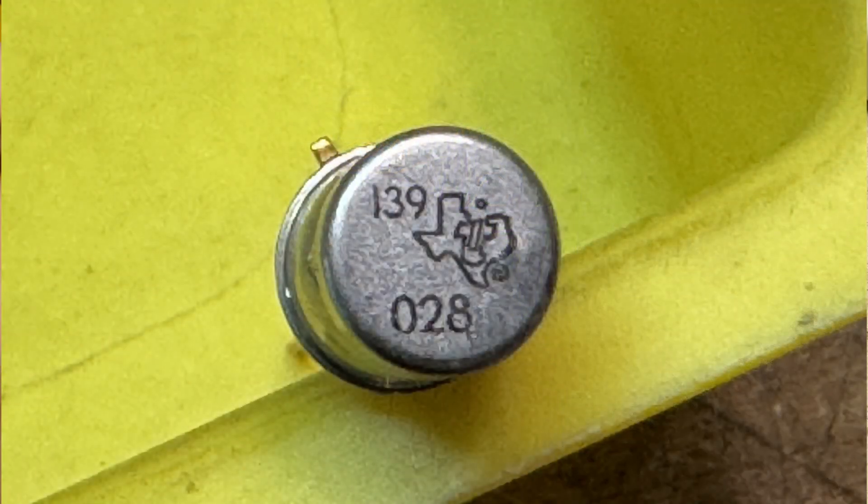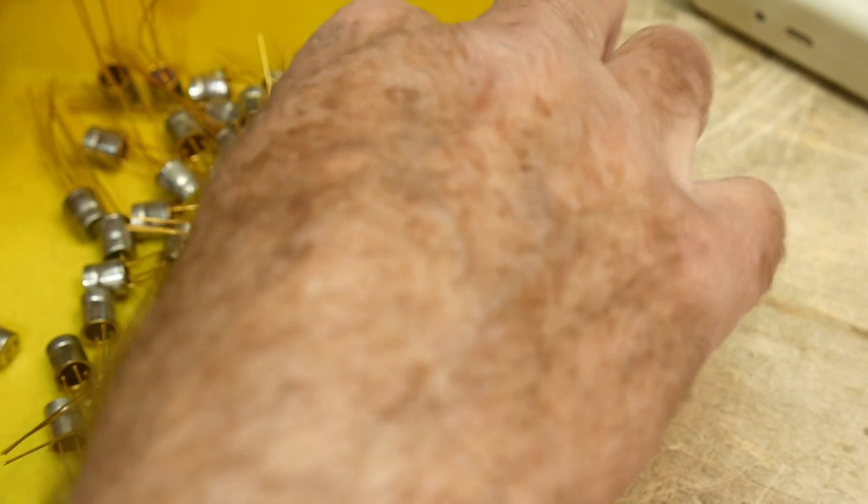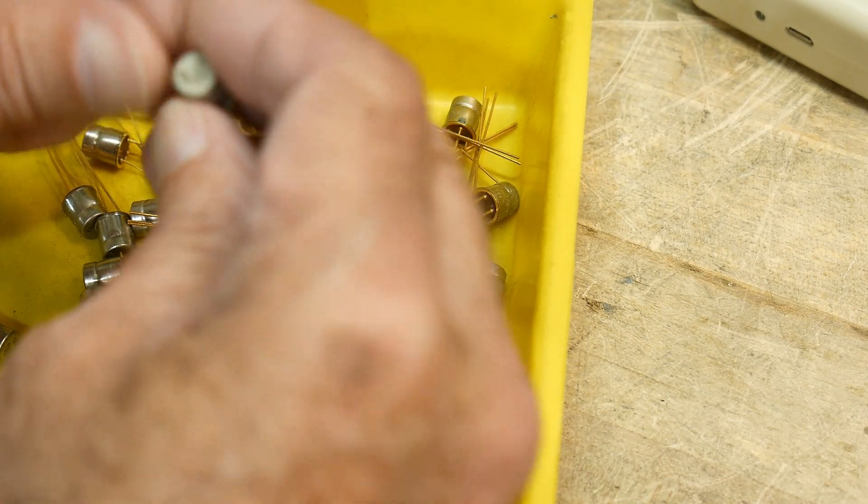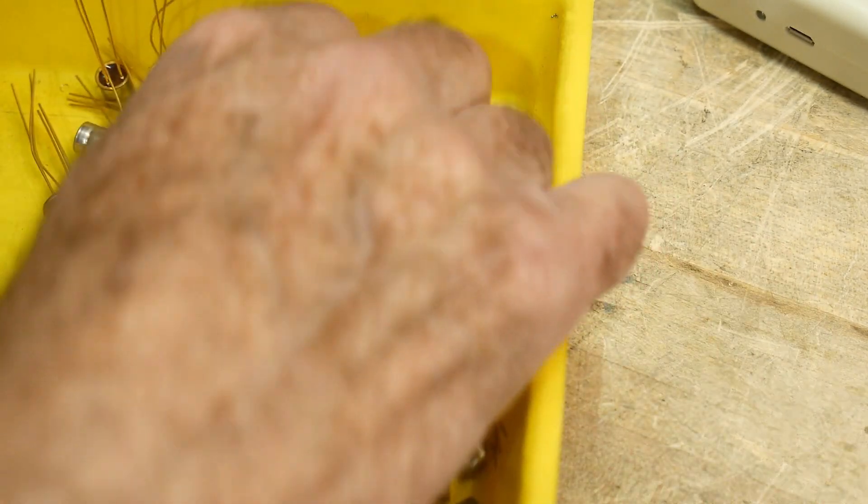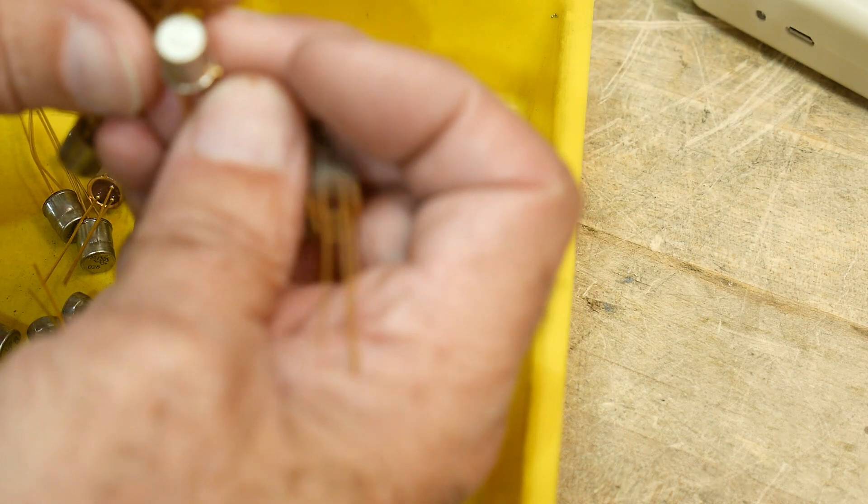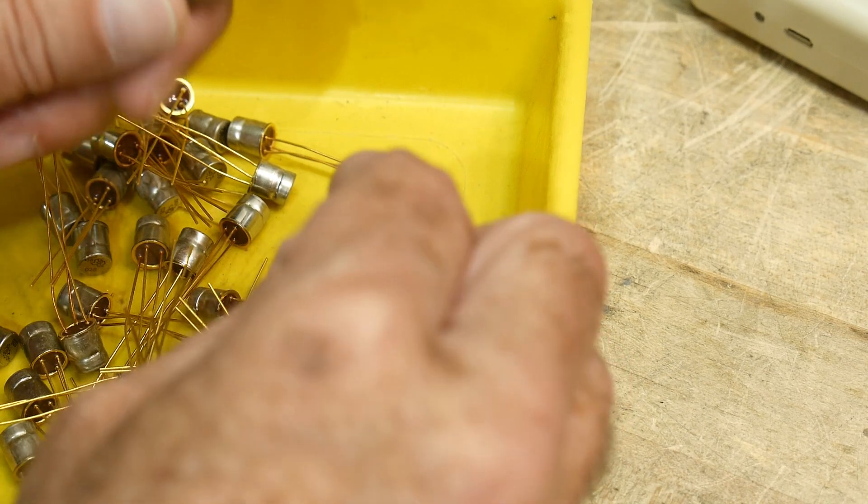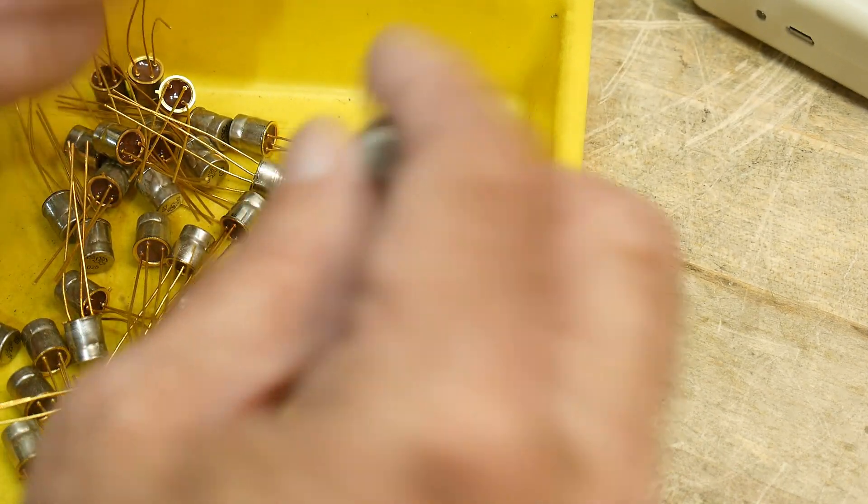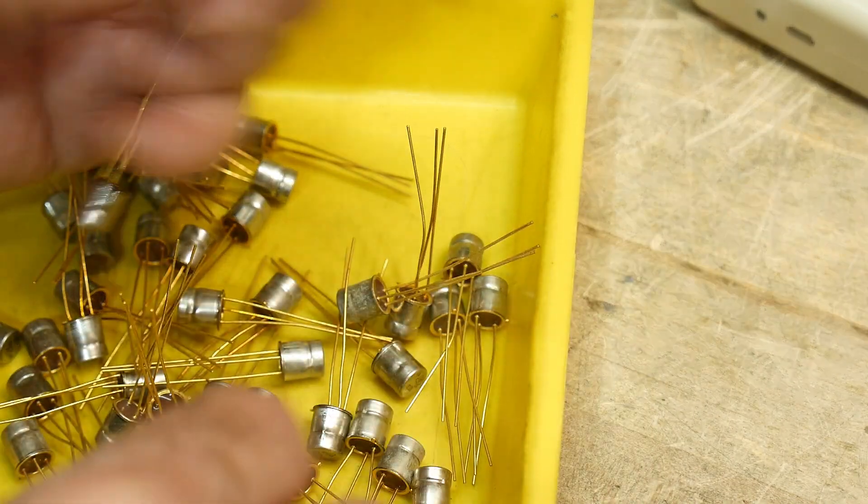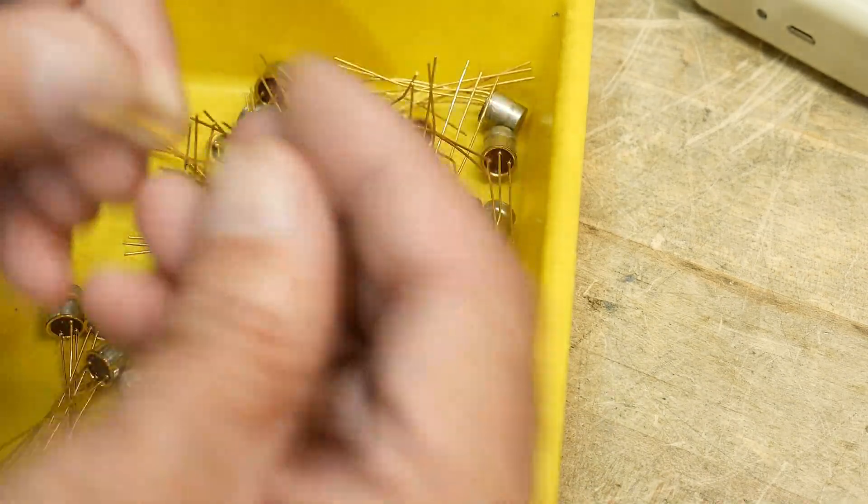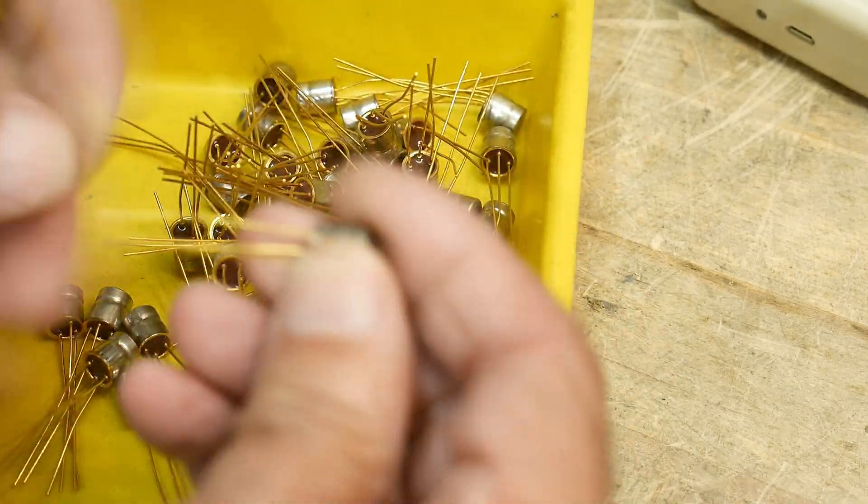So yeah, this one's 138 028. This one is 031 39 028. So I don't know if they're serialized for testing purposes, or there's another 139. Yeah, I don't know what they're 141 029 028. So they're all 028, but various other numbers, really long, long stout leads on them.